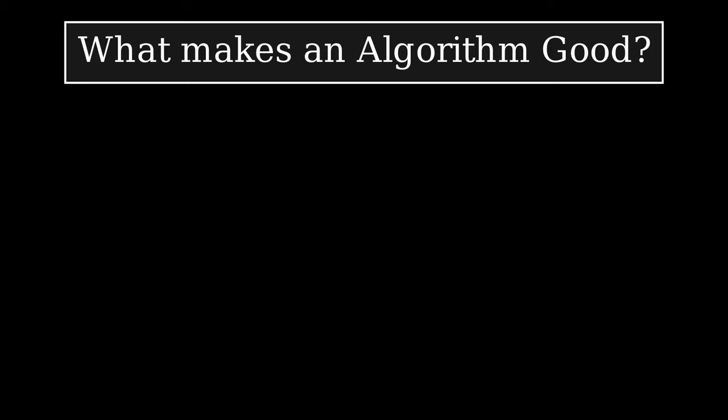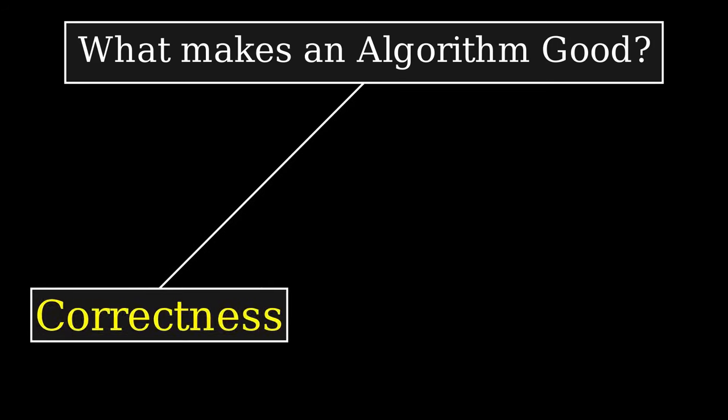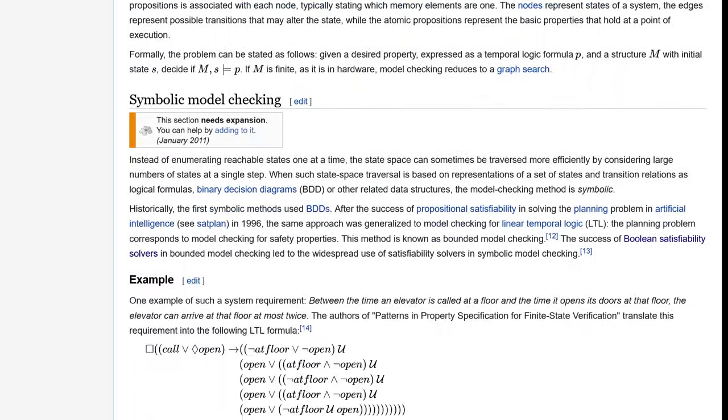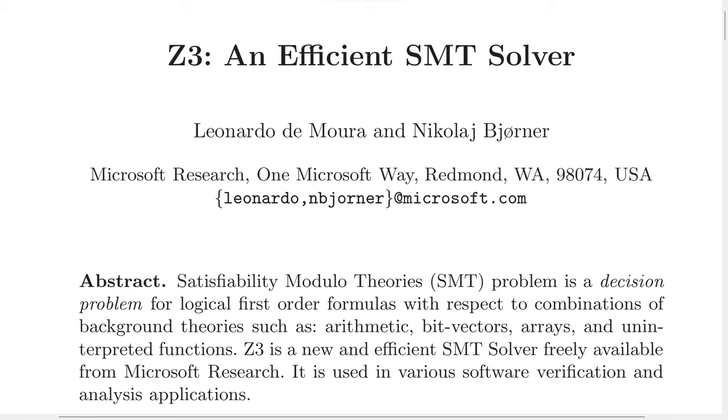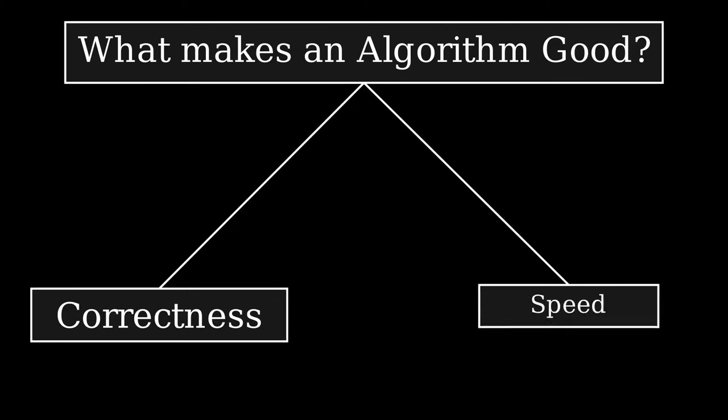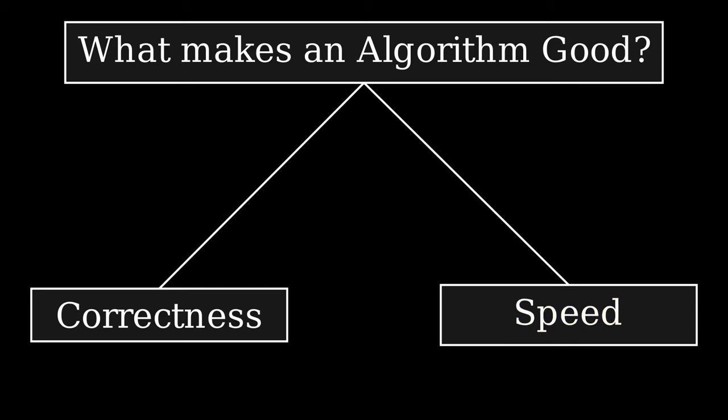There are basically two important things to look out for. Firstly, there's correctness. This one's pretty obvious. Given an input, the algorithm will give the correct output. But how does one show the algorithm is correct? That's pretty simple. Blah blah blah model checking, blah blah blah Hoare calculus, blah blah blah SMT solver. Anyways. Secondly, their speed. How long does the algorithm take? How fast is it? Will my algorithm beat your algorithm? This is what we will focus on.